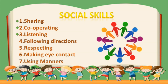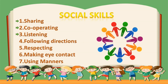Number five: respecting. Always respect your elders and give love to your younger ones also. You must respect and obey your parents and teachers. Number six: making eye contact. Good eye contact is an important part of communication — you should always make appropriate eye contact while talking. Number seven: using manners. Be a good role model with your manners. Always be polite and use words like thank you, please, and sorry on a regular basis when needed.